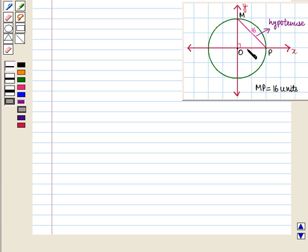From this figure we see that side MP is the hypotenuse of right-angled triangle OMP and MP is equal to 16 units. And we have to find its radius and let OM is equal to OP be equal to X units.